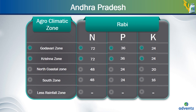For crops planted in the North Coastal zone of Andhra Pradesh in the Rabi season, the amount of nitrogen required is 48 kgs per acre, phosphorus is 24 kgs per acre and potassium is 20 kgs per acre. For the rice crop planted in the South Zone of Andhra Pradesh in the Rabi season, the amount of nitrogen needed is 48 kgs per acre, phosphorus is 24 kgs per acre and potassium is 16 kgs per acre. For the less rainfall zone, the requirement doesn't exist because the crops can't be planted in that zone in the Rabi season.